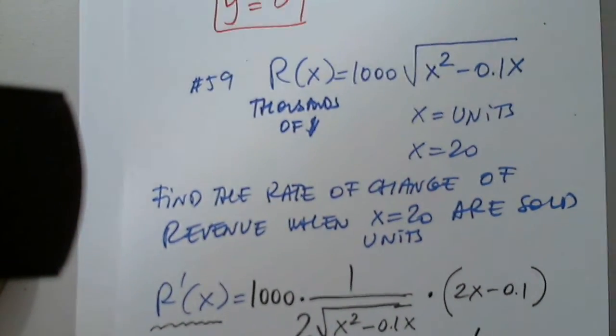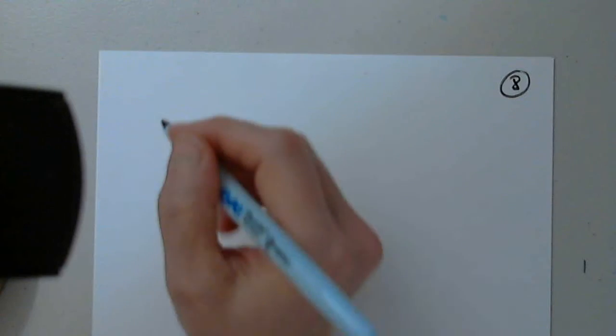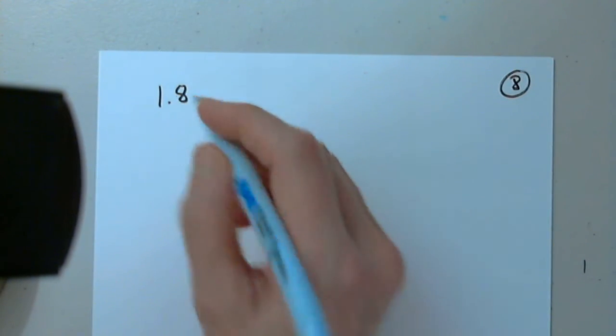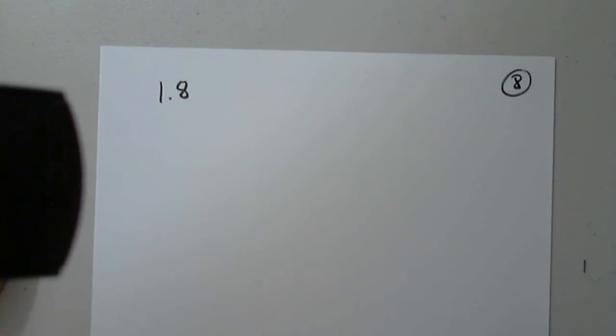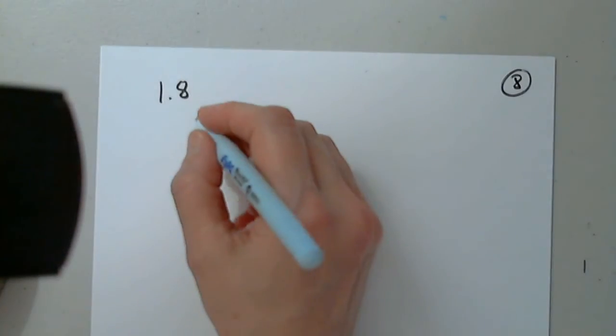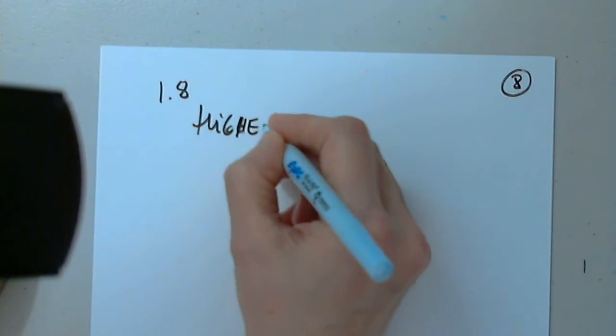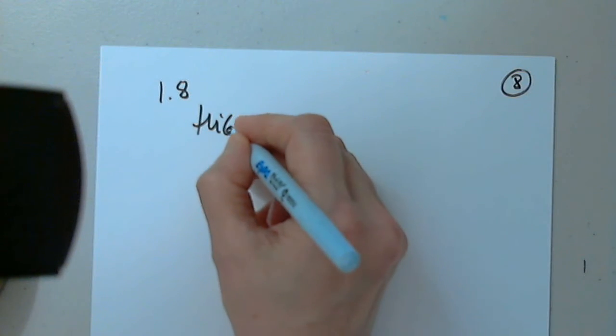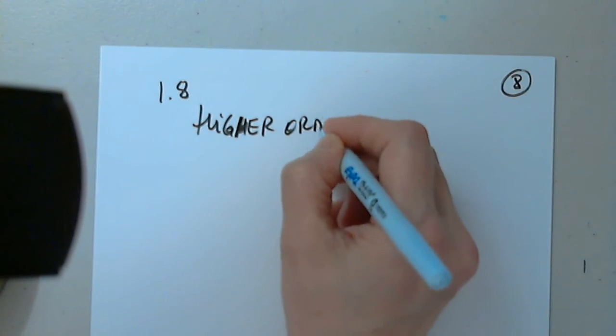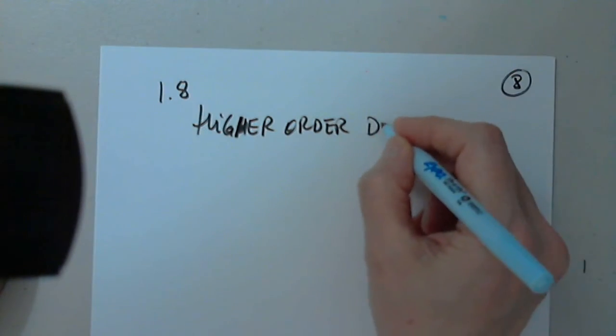Let's look at the next section, and then I will ask you to upload one little thing. This is the last and final section of this chapter — it was really long. It's entitled Higher Order Derivatives.